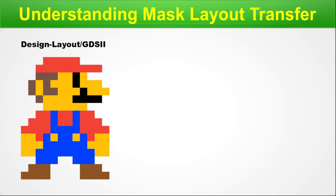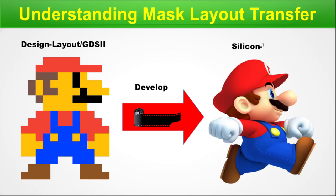Understanding mask layout transfer: here is your design layout or GDS2, which you generally draw by hand — and in ASIC you do it with your PnR tool. The GDS2 goes to the foundry where it is developed on silicon, and the circuit is realized in HD quality. You can see the Mario character: at left it is hazy and at right it is the HD quality version.